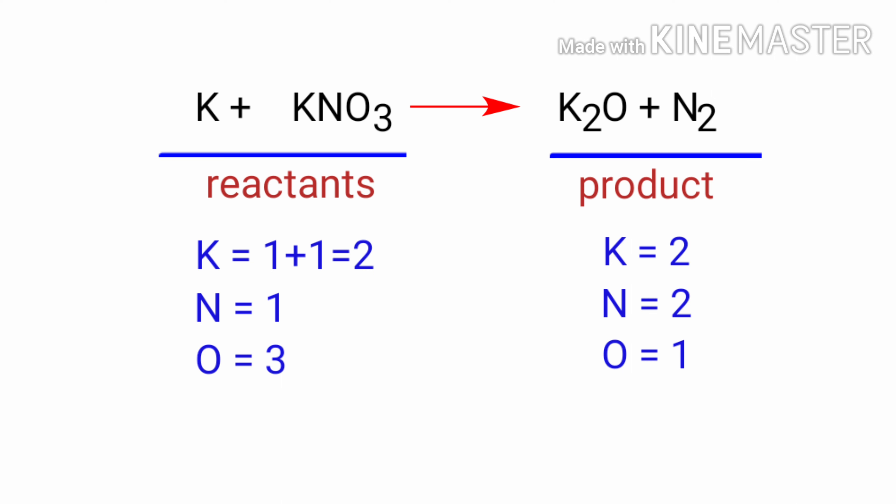And the products side, there are two potassium atoms, two nitrogen atoms and one oxygen atom present. The number of atoms are not balanced on both sides.